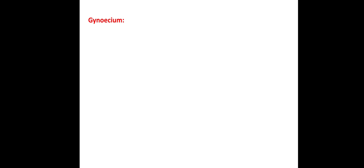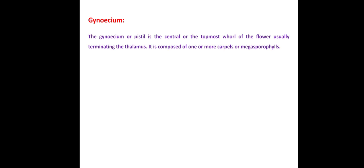What exactly is gynoecium? The pistil or gynoecium is the central or topmost whorl of the flower, usually terminating the thalamus. It is composed of one or more carpels or megasporophylls, so gynoecium is also called megasporophyll. It is the topmost or central part present inside the flower.